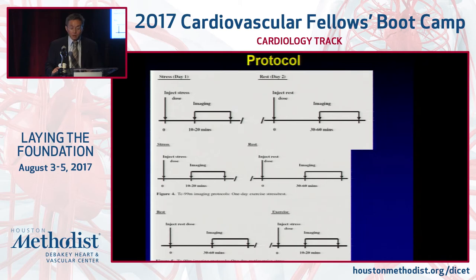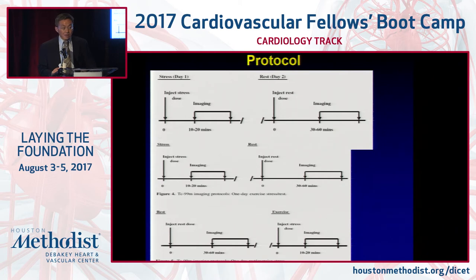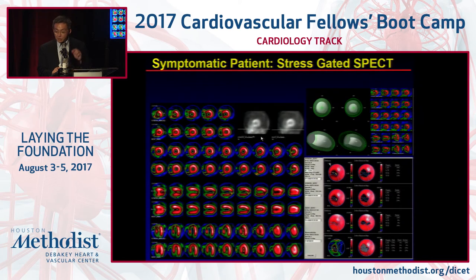There are several protocols. The gold standard is to perform the stress and rest portions on two different days with two different injections. Because it's cumbersome for patients to come back on two days, the protocol is modified to fit into one day — you can do rest first then stress, or stress first then rest. Here at Methodist, we prefer stress first, especially in patients without a history of coronary disease, because if you have a normal stress you can stop there, which is more convenient and results in a much lower radiation dose. This is an example of a patient with symptoms — the top part shows the stress images and the bottom part the resting images, with a clear defect in the anterior septal wall.